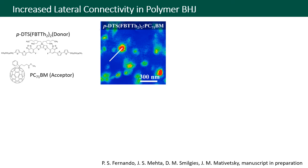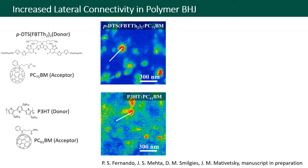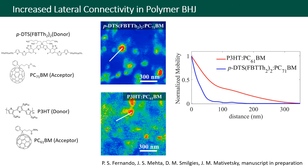Interestingly, in small molecule bulk heterojunctions shown at the top, hole-conductive regions are quite isolated from one another, while in a polymer system shown at the bottom the hole transport regions are more interconnected. This effect can also be seen in line profiles with the hole mobility decreasing more gradually near hole mobility hot spots in the polymer system. This result suggests that lateral electrical connectivity in the polymer bulk heterojunction allows for more spatially uniform charge collection, probably resulting from charge transport along the polymer backbone.